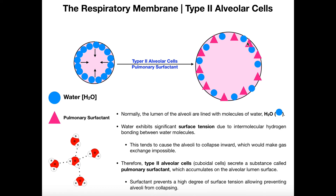Now, in the case of premature infants — babies who were born before the nine-month mark, at least significantly before — they don't yet have the capacity to produce pulmonary surfactant. It's not to say they won't later on, but at that point in development, if they're born significantly prematurely, they're not going to have the ability to make pulmonary surfactant.